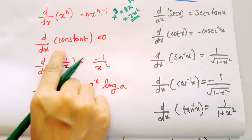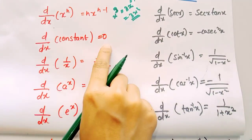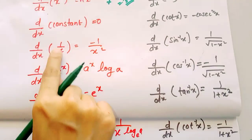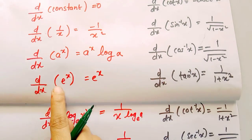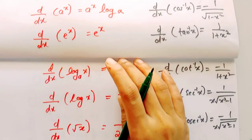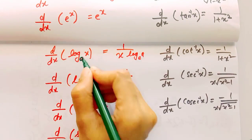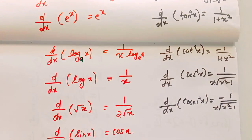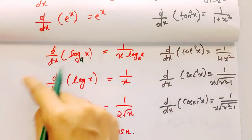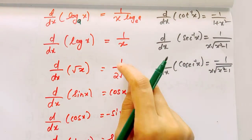Let's take a look at the derivative formulas. The derivative of 1 by x is minus 1 by x squared. The derivative of a raised to x is a raised to x times log a. The derivative of log x to base a is 1 divided by x times log e.